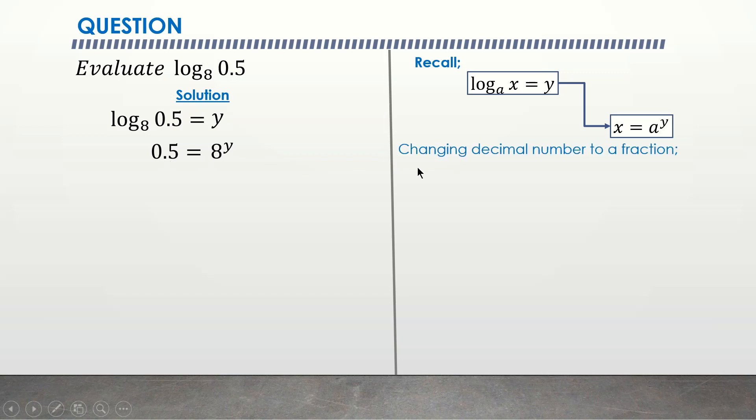To change a decimal number to a fraction, the 0.5, I have to move my decimal point to the right of the non-zero number. So that becomes 5 over 10. It is 10 because I moved just one place. If I move two places it becomes 5 over 100. If you move three places it becomes 5 over a thousand. But because I move one place it gives me 5 over 10. Now I can also simplify this to the lowest term which gives us 1 over 2. So my 0.5 becomes 1 over 2 equal to 8 to the power y.